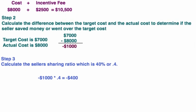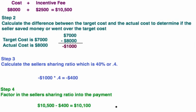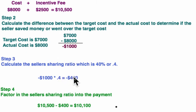Step number four: factor in the seller's sharing ratio into the payment. We take the original $10,500 and subtract $400, which is their sharing ratio responsibility. $10,500 minus $400 equals $10,100, which will be the check we write them and the answer to this question.